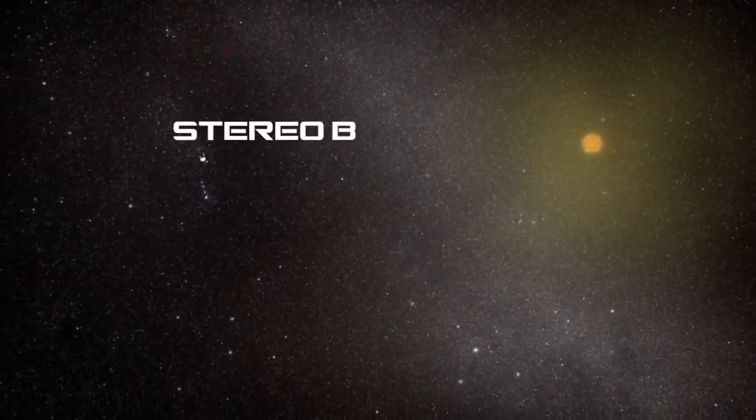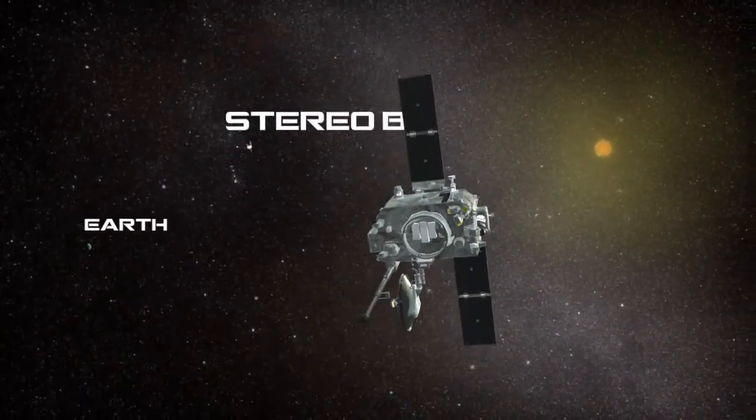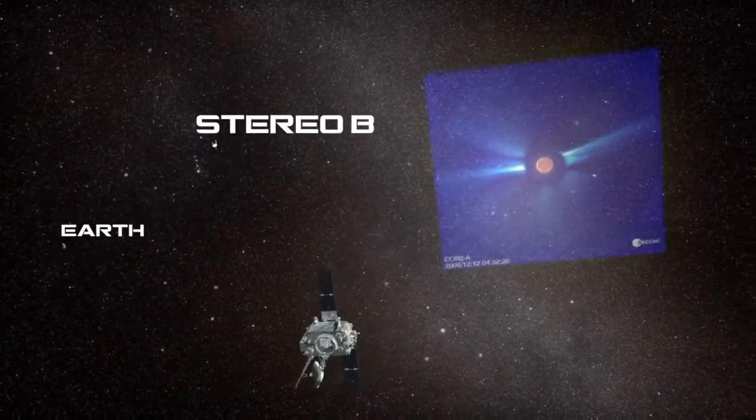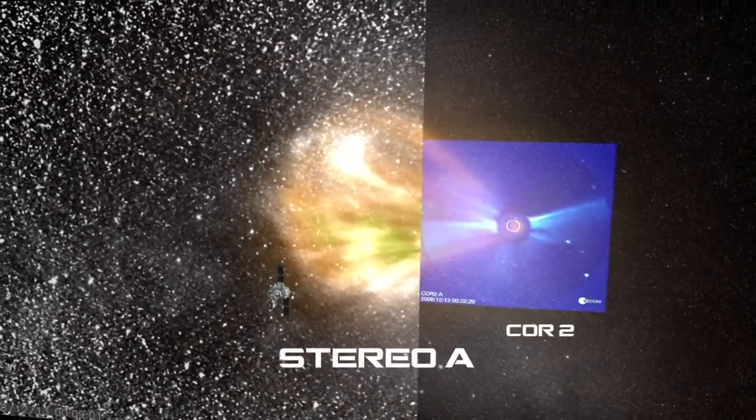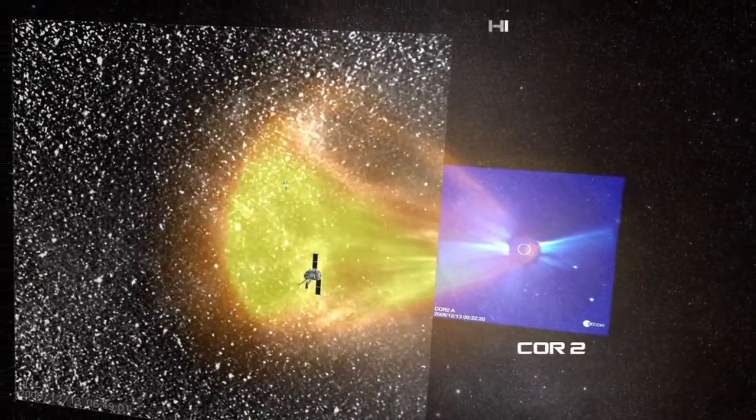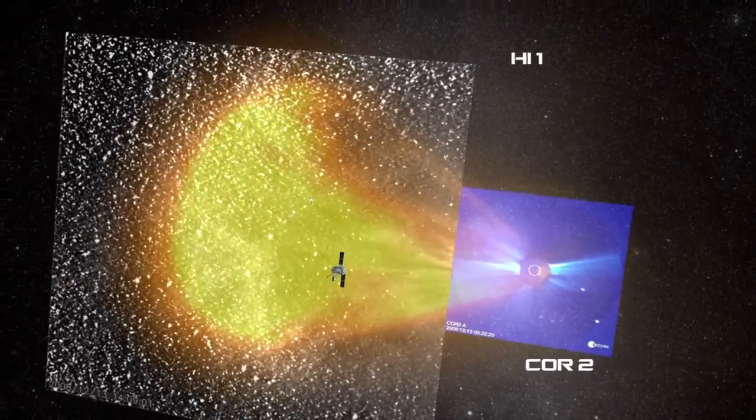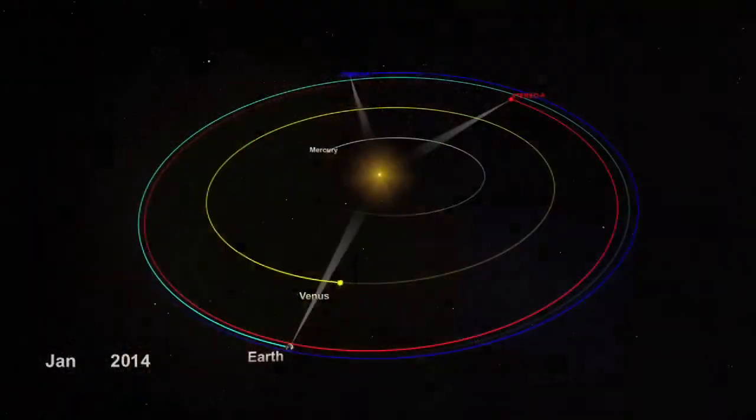STEREO, or the Solar Terrestrial Relations Observatory, is a NASA mission consisting of two spacecraft orbiting the sun in orbits just inside and outside the Earth's, with the objective of learning more about solar activity and how it propagates through the heliosphere.